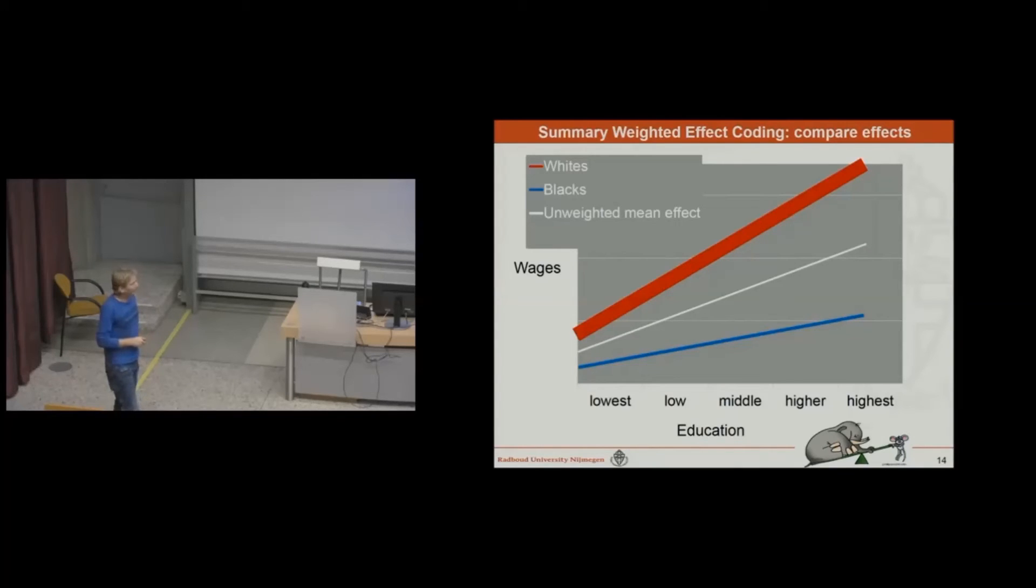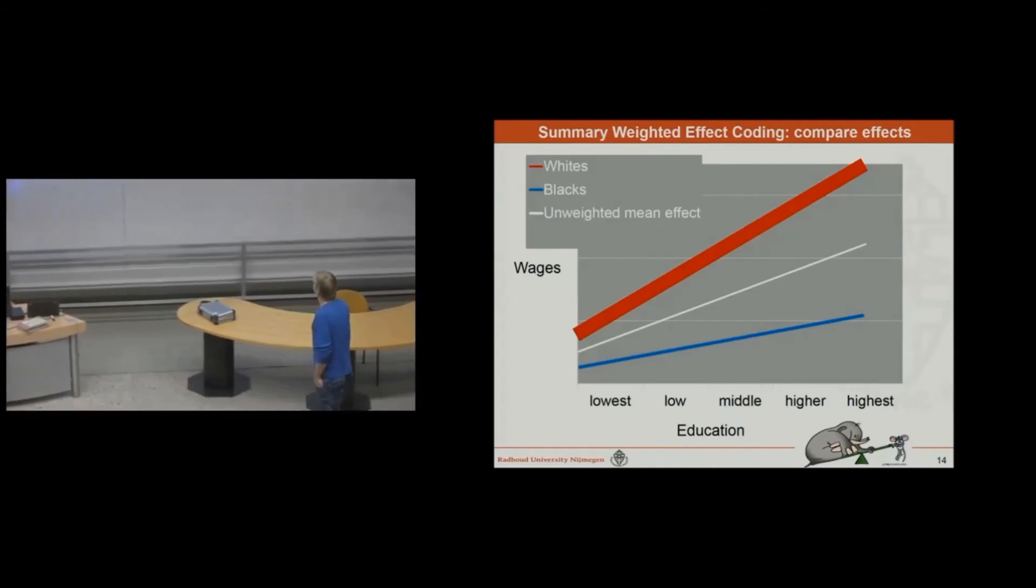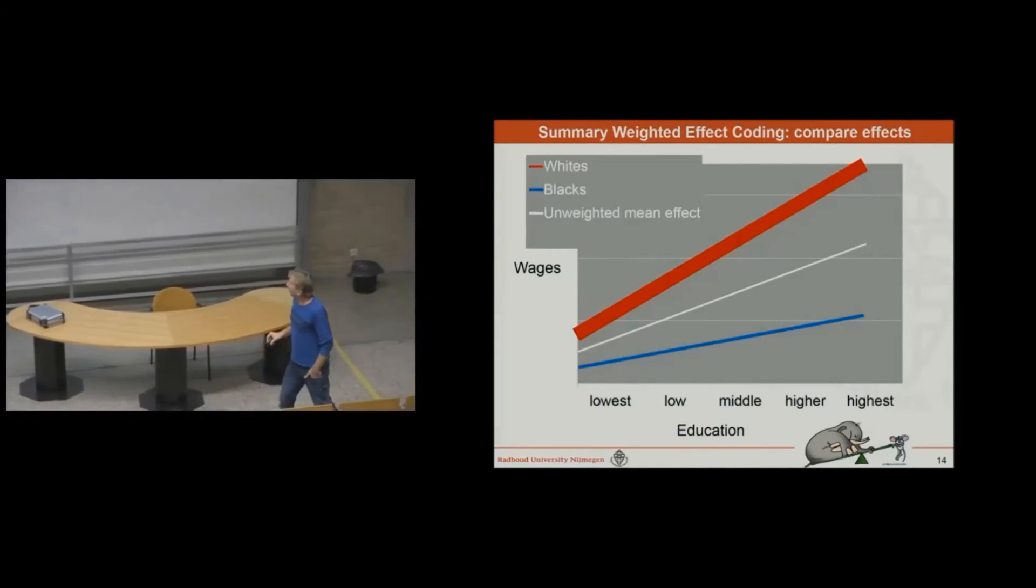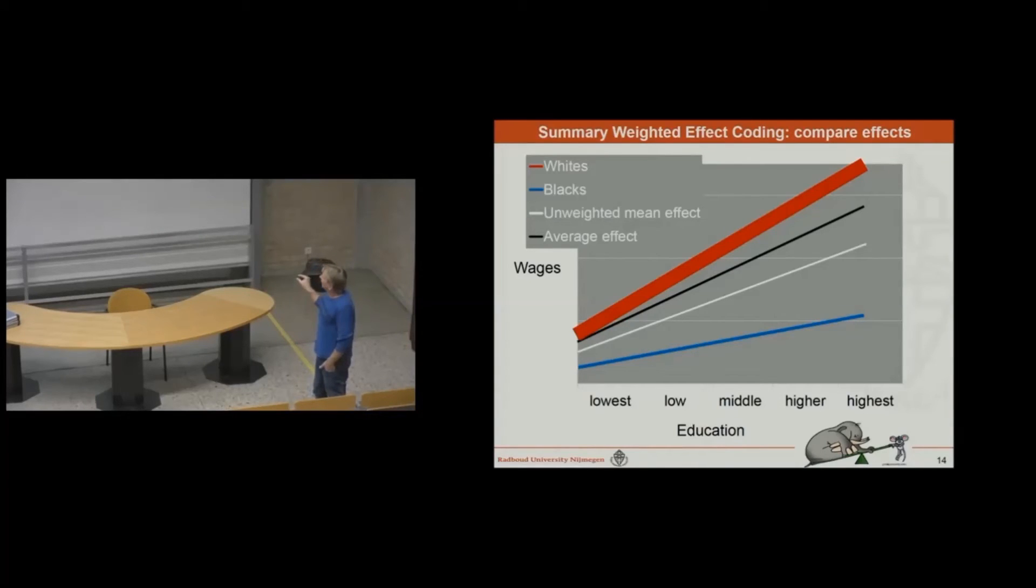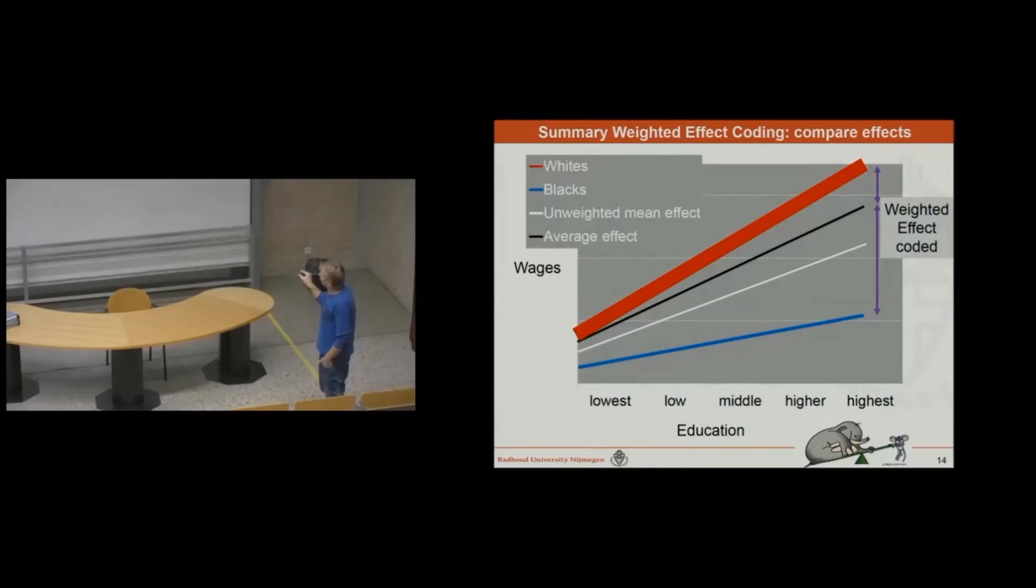But I think the good one is this line over here represents that the whites are, the number of whites is much larger than the number of blacks. It's about 73% is white and 10% is black. So the average effect is about here. And you could take the differences in effect between the whites with the black line and the black population with the black line. And that is called weighted effect coding interaction. And that is the new thing we added to the literature.